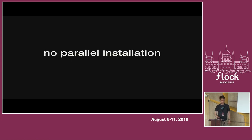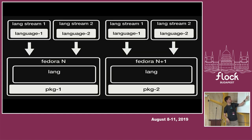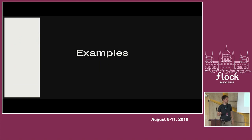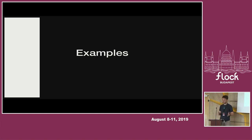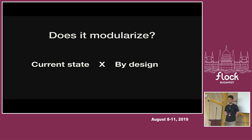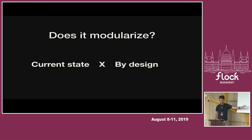I've already mentioned this, but there's no parallel installation — you can only install one stream of a language onto a given system. That was basically the basics of modularity at a really high level. Now I have three examples of packages we can look at to see if modularity can help or not. Because modularity is still in progress — a lot of things have been completed but not everything — I'll be looking at whether it helps right now, and whether it helps by design, meaning when all the features are completed.